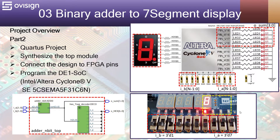On my DE1 SoC board I will be able to do the following. Let's say that A has the decimal value of 7 and B has a decimal value of 1. I should be able to see 1 0 0 0 on the LEDs, which is the value 8, and also the value 8 on the 7-segment display.